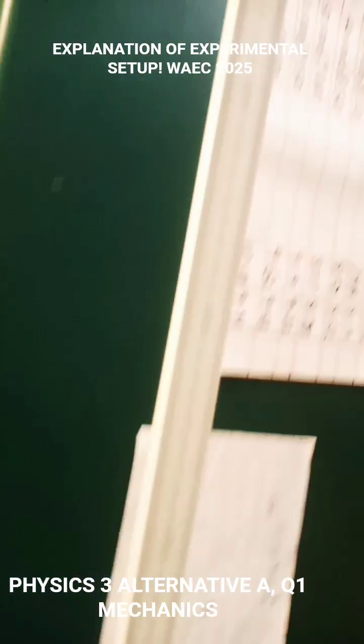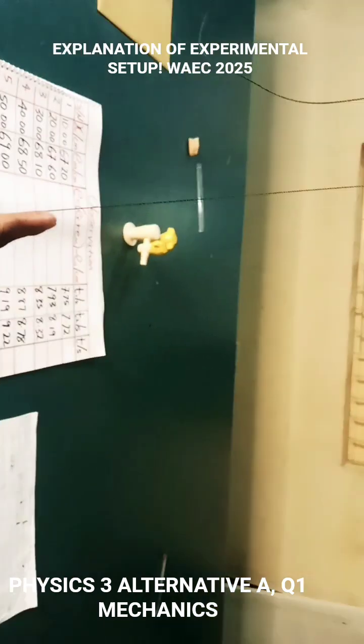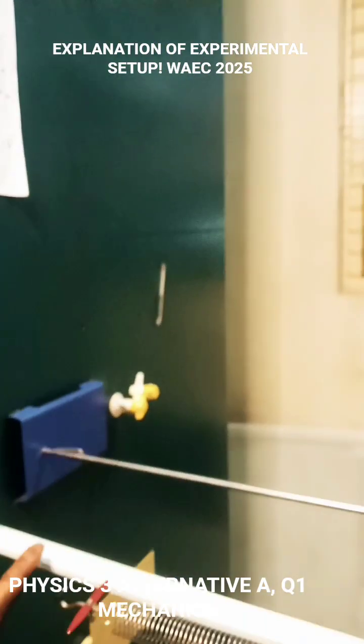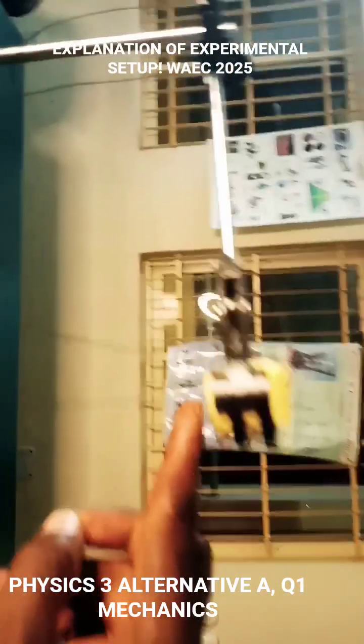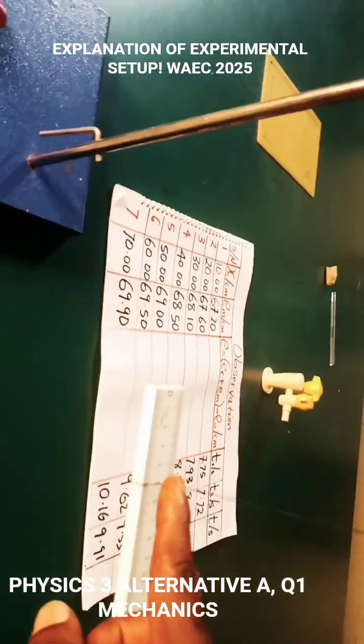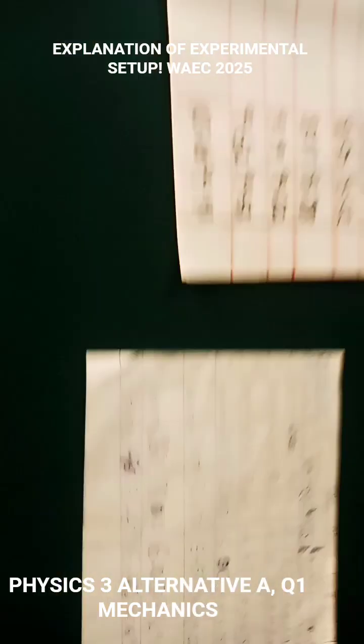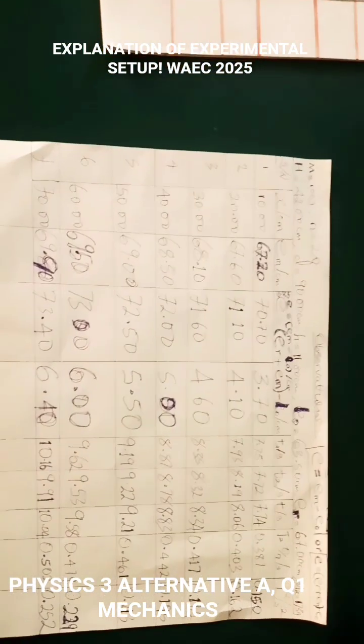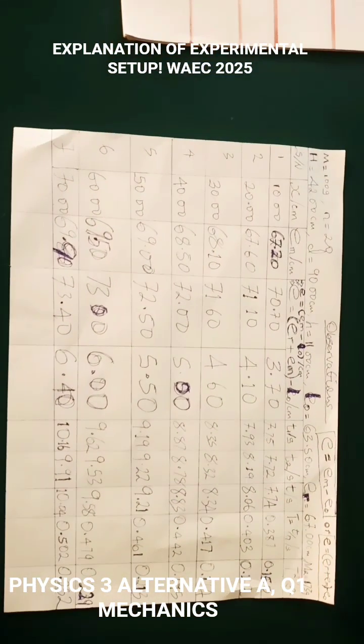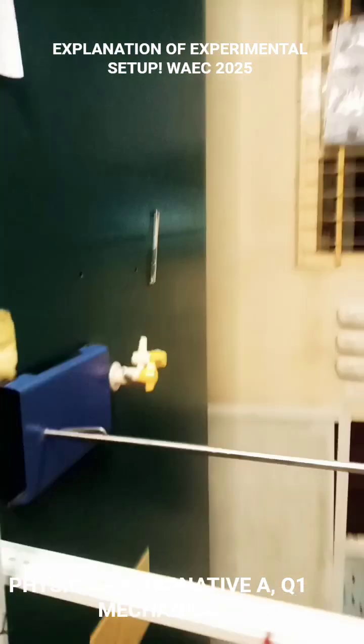Now this is what happens. The distance between this thread and this arrangement is my d, and then from this place to this place is my capital H. That is what you are seeing in the table of values.